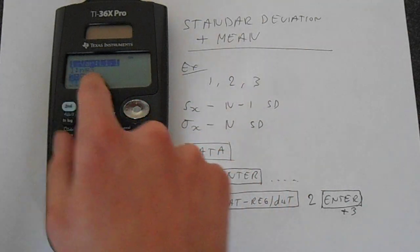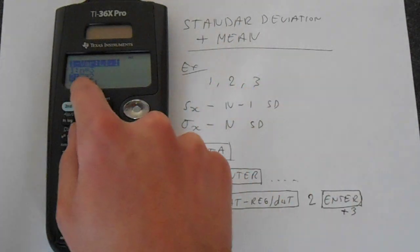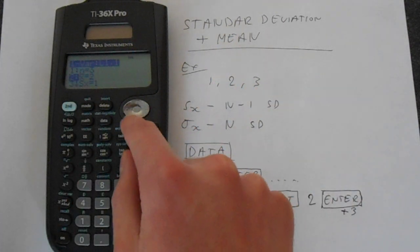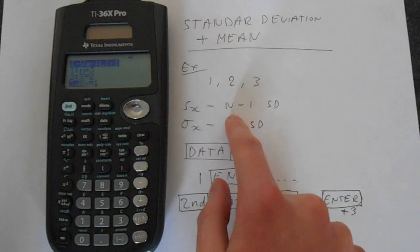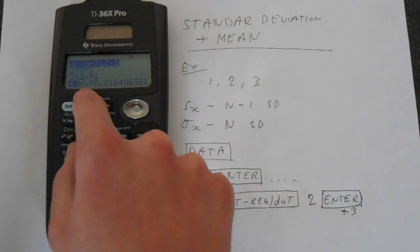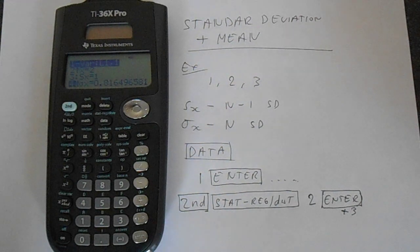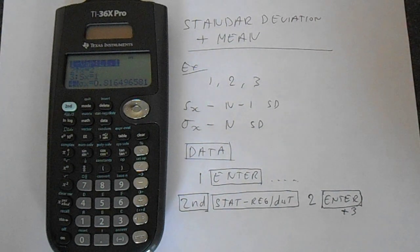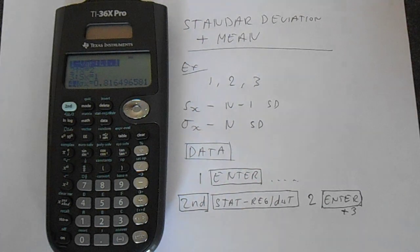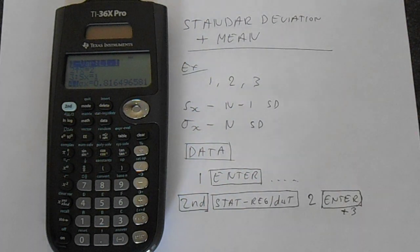And so that gives us an N of 3: 1, 2, 3. The mean is this X bar which is of course 2. Standard deviation N minus 1 is 1, and we've got this roughly 0.82 for the N definition of standard deviation. So that's how standard deviation and mean is done on this calculator. Hopefully this is helpful to you, and thank you for watching.